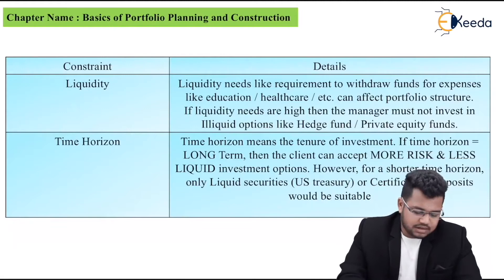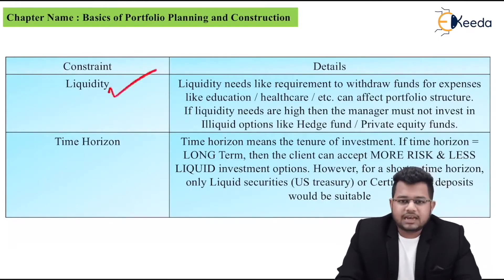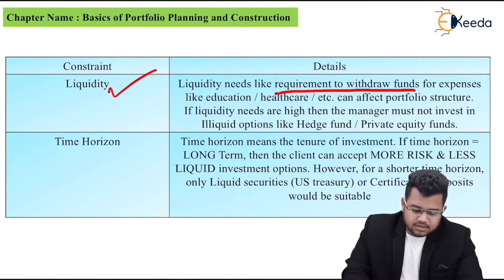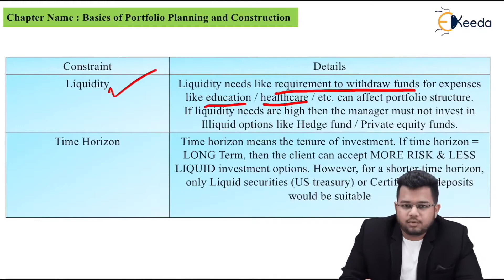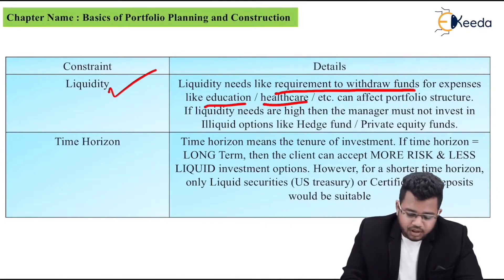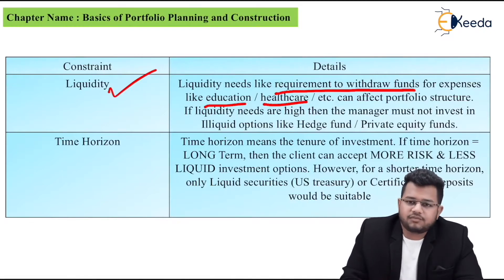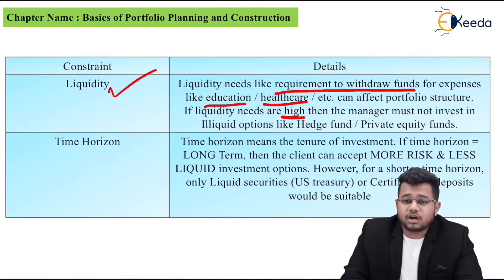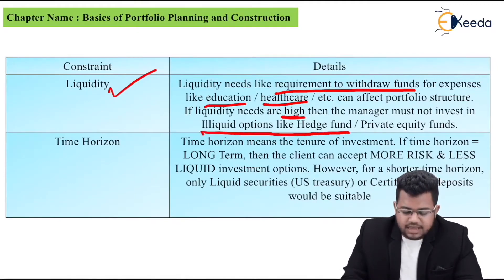First constraint is liquidity constraint. Liquidity means there might be a need for cash in the future. Liquidity needs like requirement to withdraw funds for expenses like education, healthcare, etc. You put money in a portfolio today, but you might need to withdraw it anytime. If such liquidity needs are there, it will definitely affect your portfolio. If liquidity needs are high, then the manager must not invest in illiquid options like hedge funds.